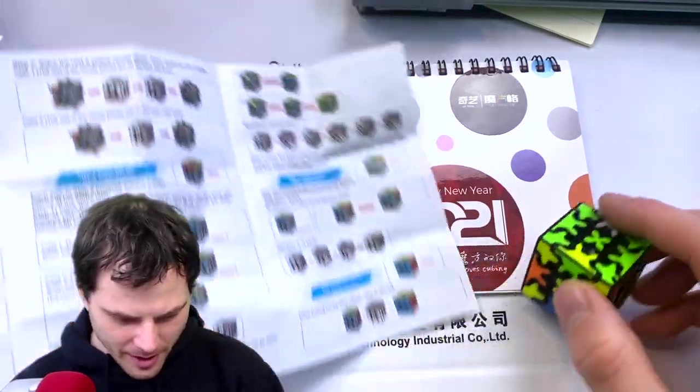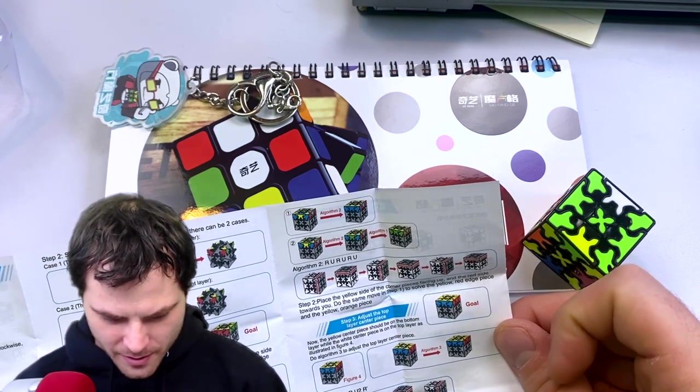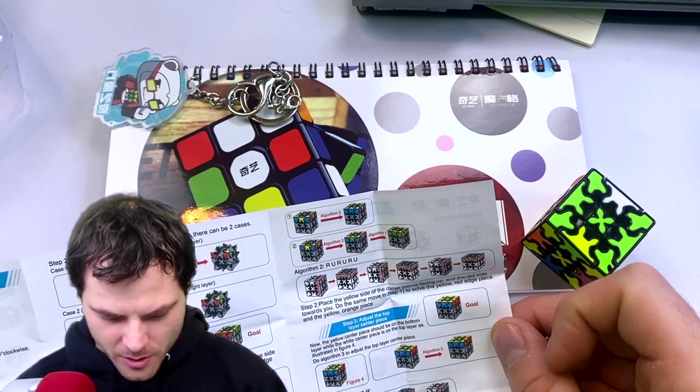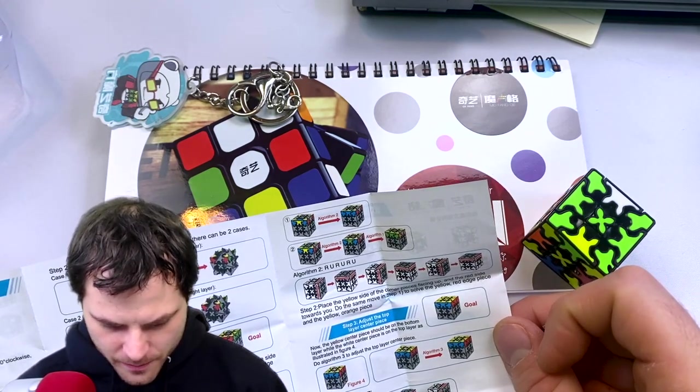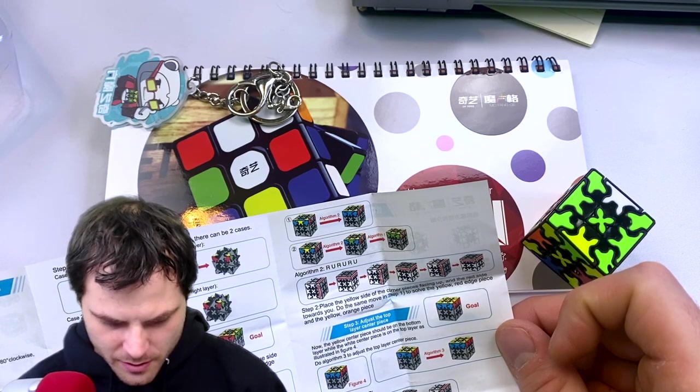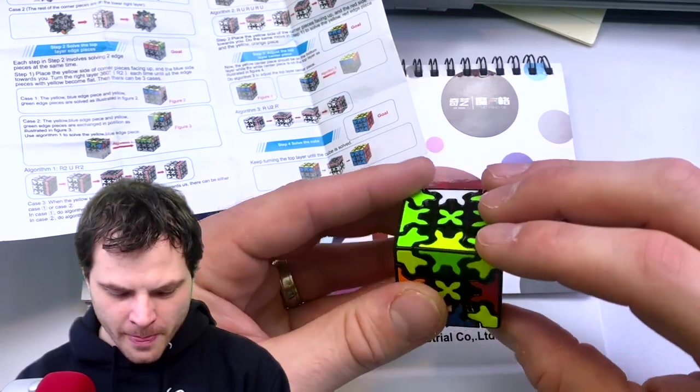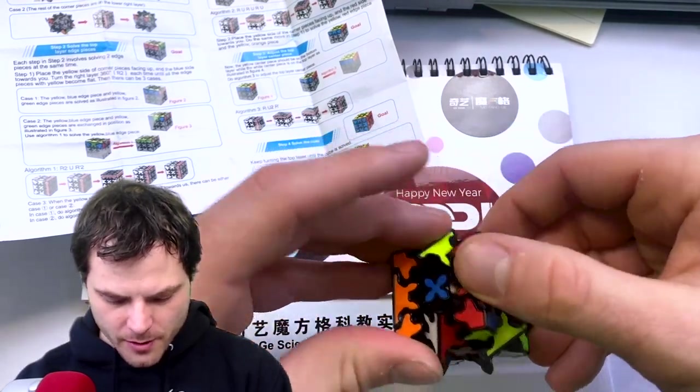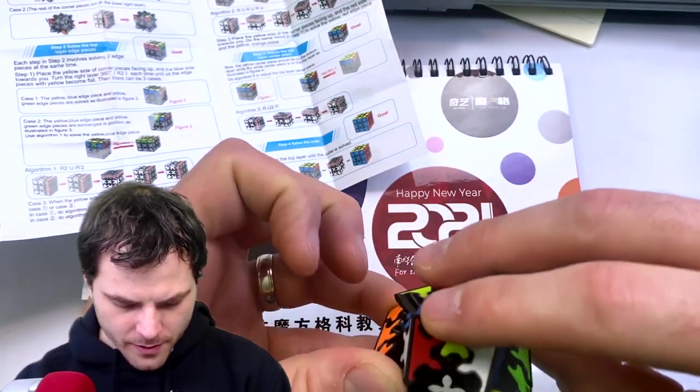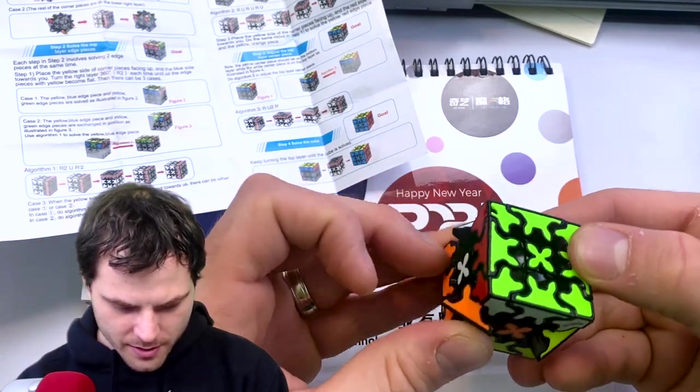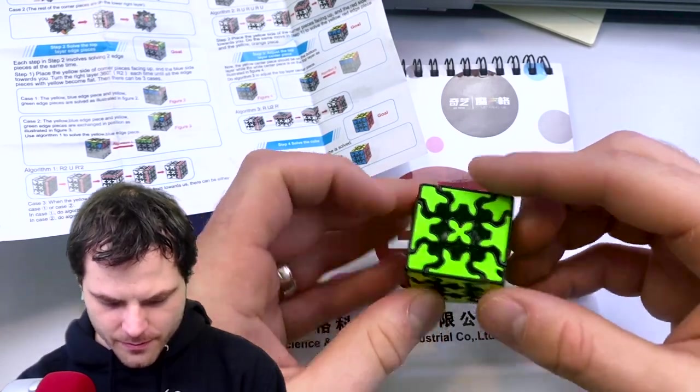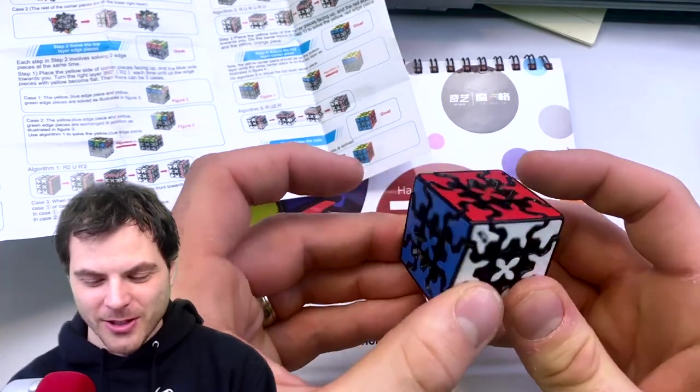Well, I got to here. What other algorithms do we have? R2, U2, or RU, RU, RU, which does something. Let's just see what that does. We're going to go R, U, R, U, R, U. That solves it. That's what you have to do. You just have to do that.